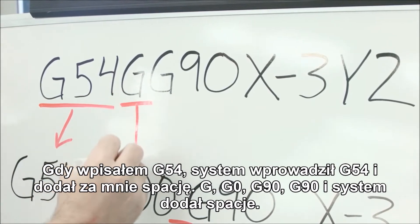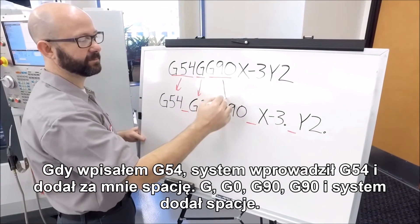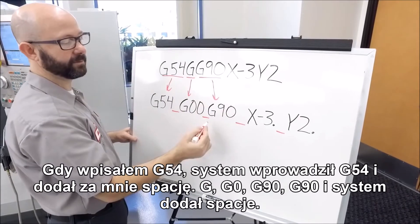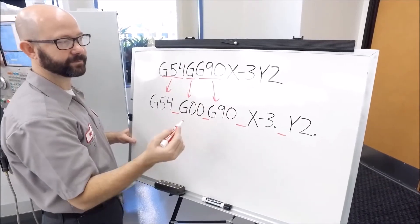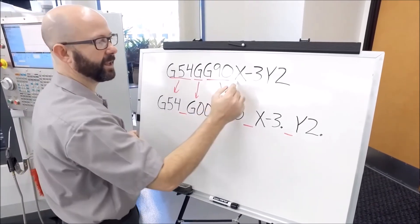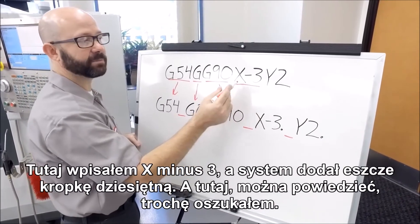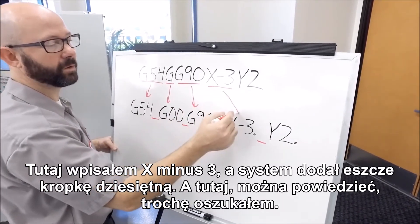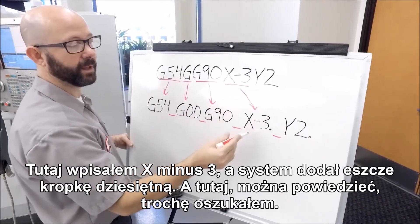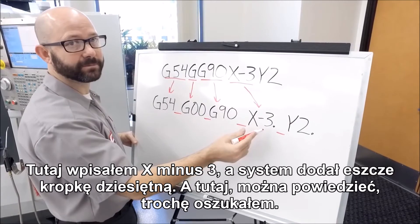The control added the spaces for G, G0, and G90 automatically. Here I entered X minus 3 and the control added the decimal point for us.